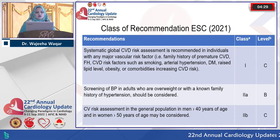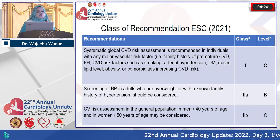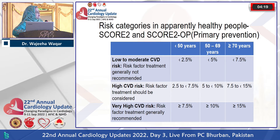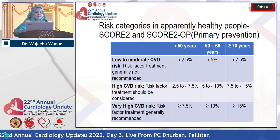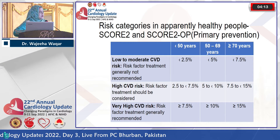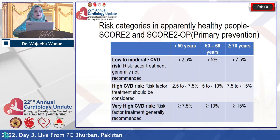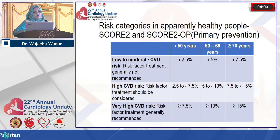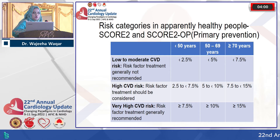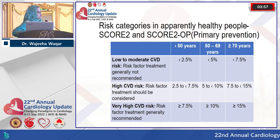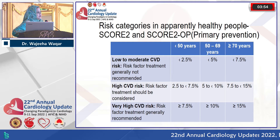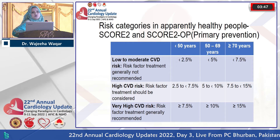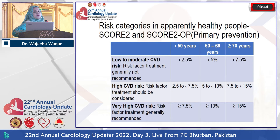Risk stratification can also be done in obese persons — that is a Class 2A indication. At AFIC, we risk stratify patients using a scoring system called SCORE2, applied to apparently healthy persons with risk factors. SCORE2 is easily available on online calculators. We classify patients according to their risk score into low-to-moderate, high, and very high risk. The bottom two groups — high and very high — are our main area of interest for prevention.